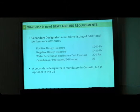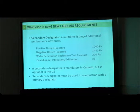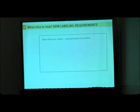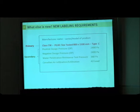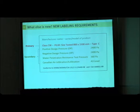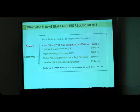A secondary designator is mandatory in Canada, optional in the US. Essentially, this is what would show up on a Canadian window or door performance rating label. You would expect to see a primary designator followed by a secondary designator, and some statement that it conforms to our NAFs standard and the Canadian supplement.